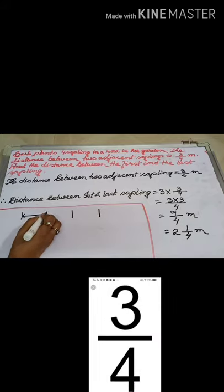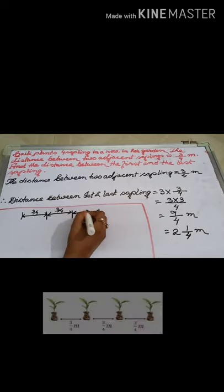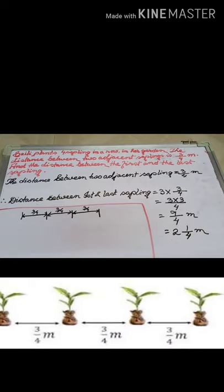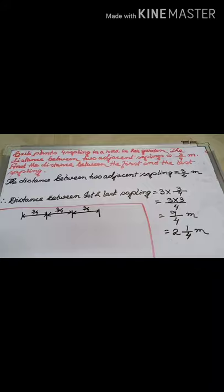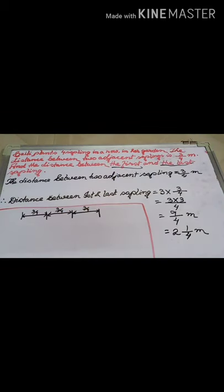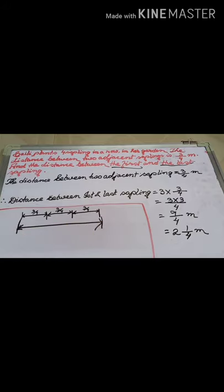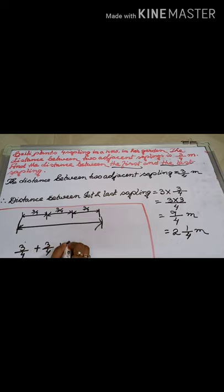The distance between the 1st and 2nd sapling is 3/4, the distance between the 2nd and 3rd is also 3/4, and the distance between the 3rd and 4th is also 3/4. You have to find the total distance from the 1st to the last sapling. The distance is 3/4 + 3/4 + 3/4.